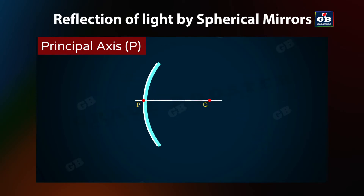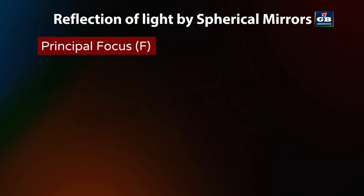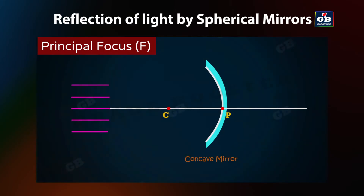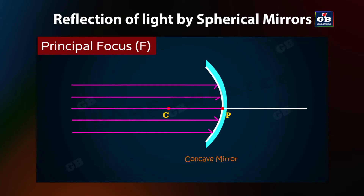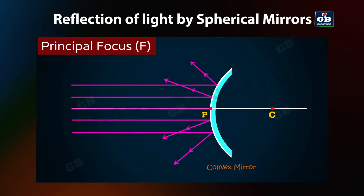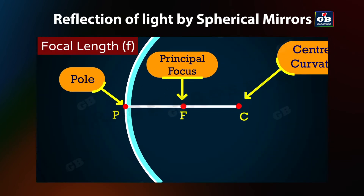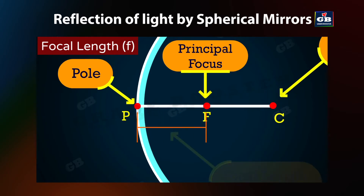The principal axis is normal to the mirror at its pole — meaning at the pole, the angle between the plane of the mirror and the principal axis is 90 degrees. Principal focus: if a number of light rays parallel to the principal axis fall on a concave mirror, they all meet at a point on the principal axis called the principal focus. In the case of a convex mirror, the reflected rays appear to come from a point on the principal axis, which is also called its principal focus. The principal focus is represented by the letter F.